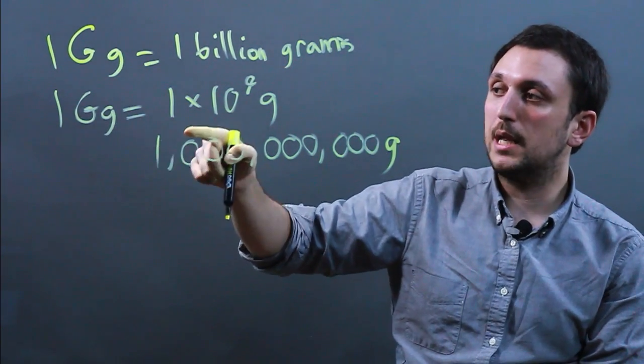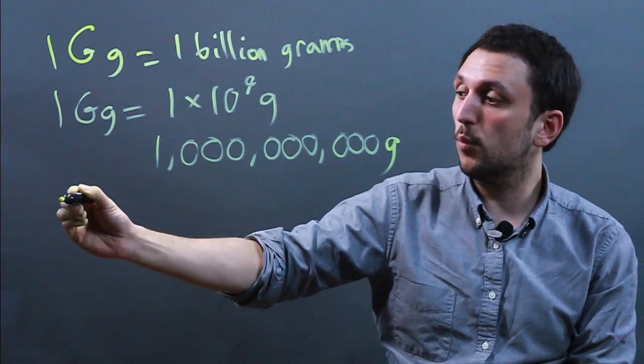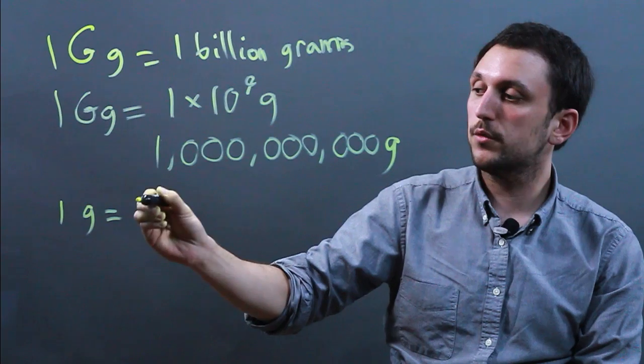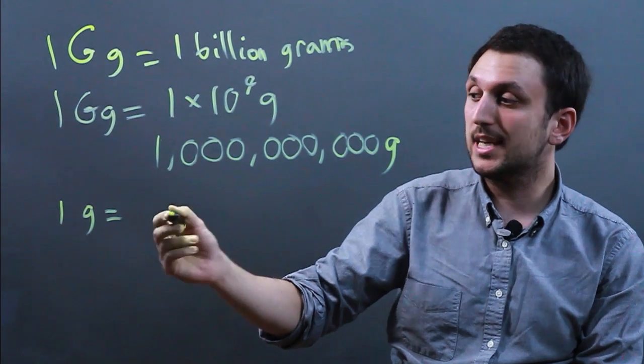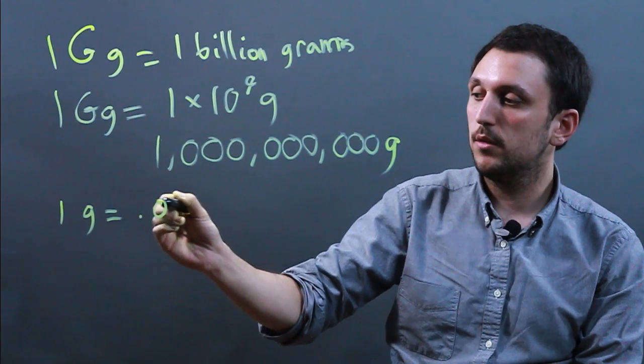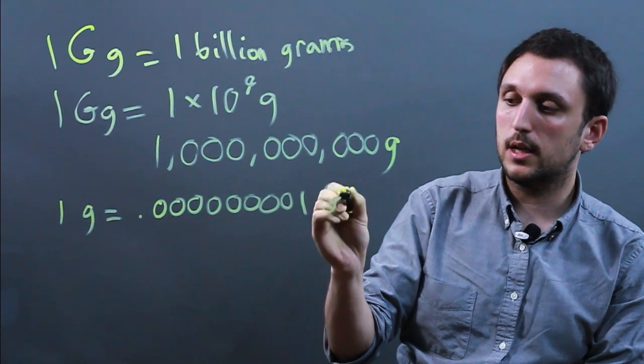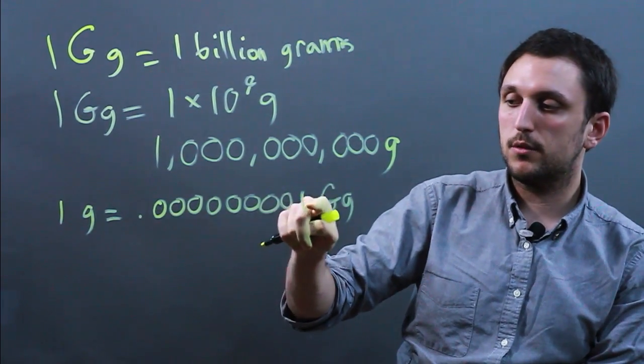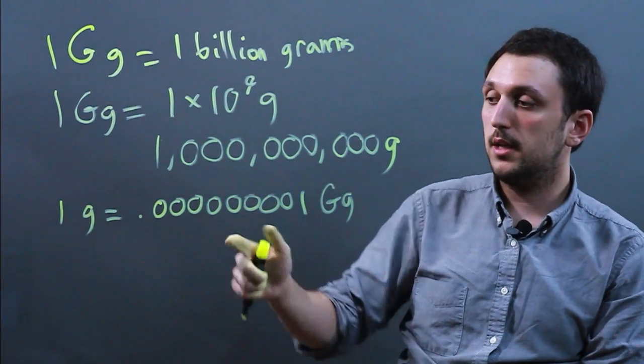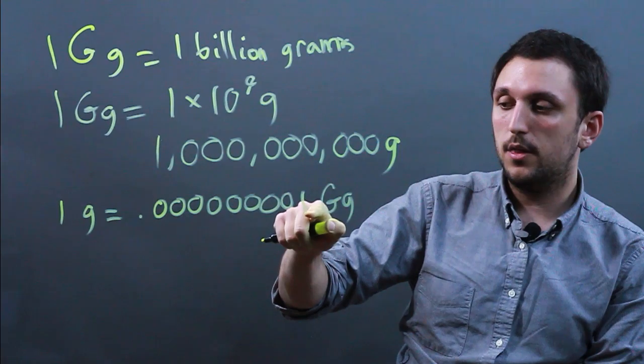So one gigagram equals one billion grams. That means one gram equals one billionth of a gigagram, meaning 0.000000001 gigagram. Now we only have eight zeros and a one because the one is in the ninth place.